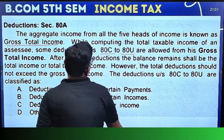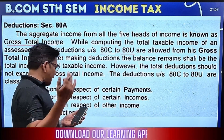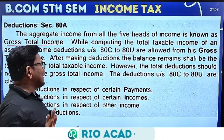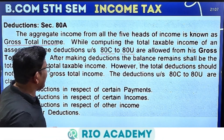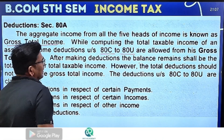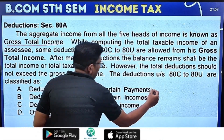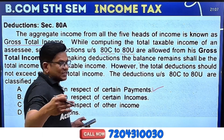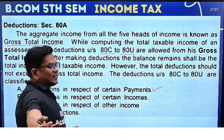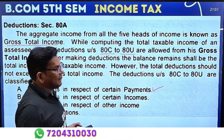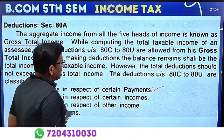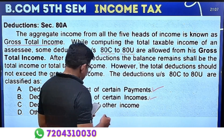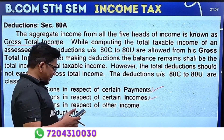What is 80C to 80U? 80C to 80U is the reduction in respect of certain payments. Certain payments are specified, and certain income is also specified under these sections.